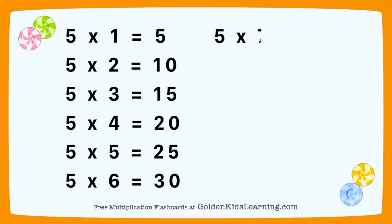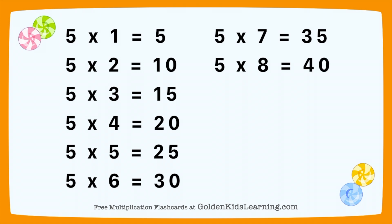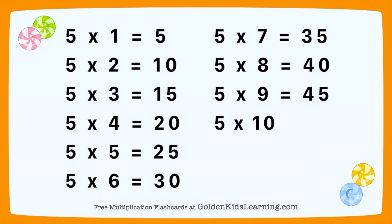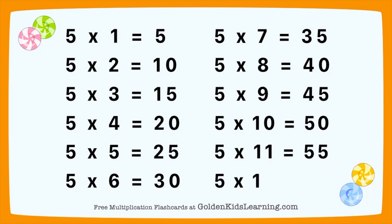5 times 7 equals 35. 5 times 8 equals 40. 5 times 9 equals 45. 5 times 10 equals 50. 5 times 11 equals 55. 5 times 12 equals 60.